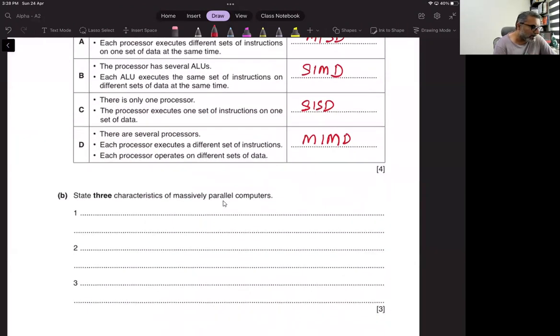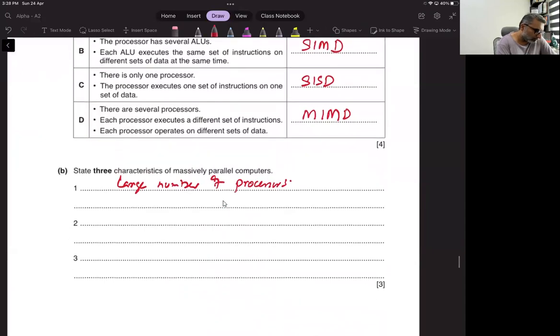State three characteristics of massively parallel computers. These are super computers. They have got enormous number of processors and those processors are being networked together. So a large number of processors, network of processors. Network infrastructure is required to wire processors together.